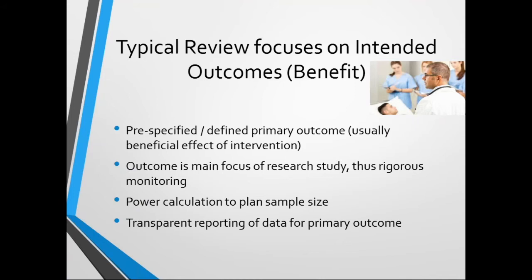In a typical randomized controlled trial, there's a power calculation where the sample size is estimated, so the trial has a good chance of capturing and measuring the events in sufficient numbers of participants for us to draw meaningful conclusions. When a manuscript is produced, the primary outcome is usually very well reported, so we can get numerical data on that.